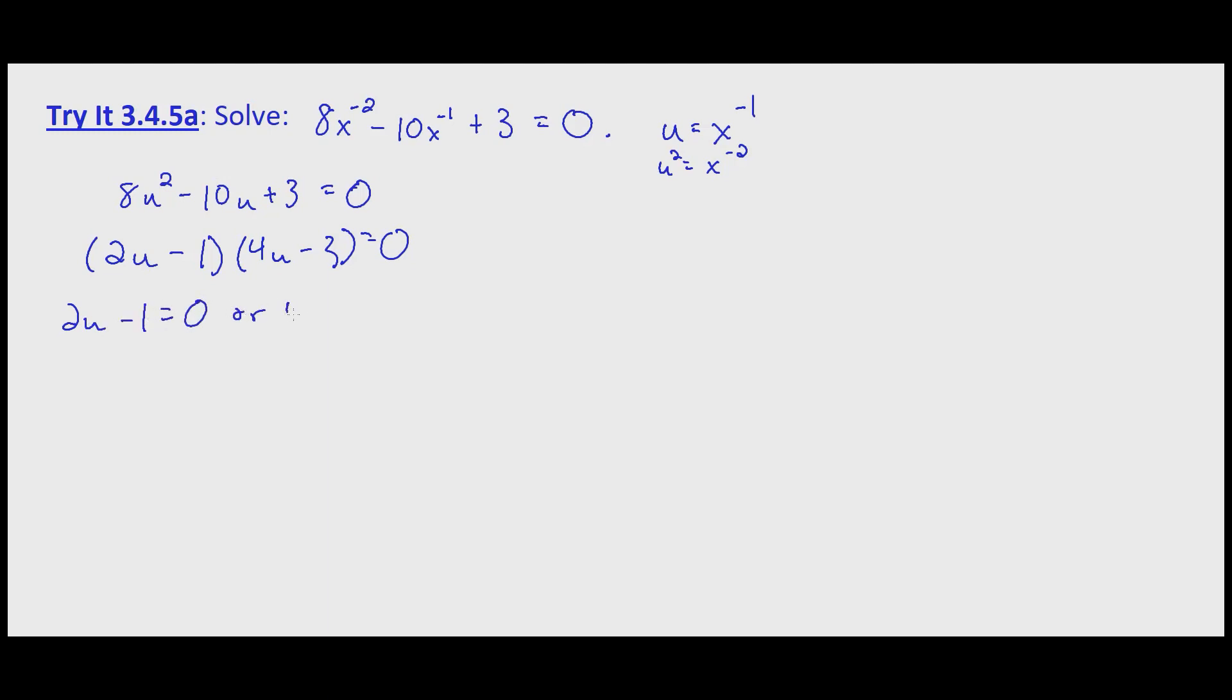So 2u minus 1 equals 0, or 4u minus 3 equals 0. So 2u equals 1 adding 1 to both sides, or 4u equals 3 adding 3 to both sides. So u equals 1 half, or u equals 3 fourths.